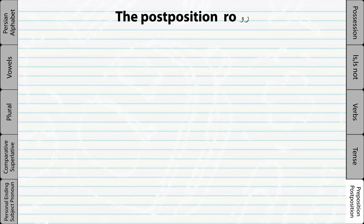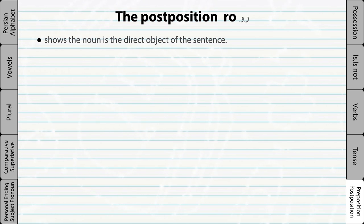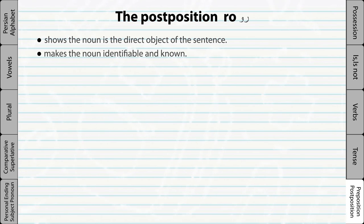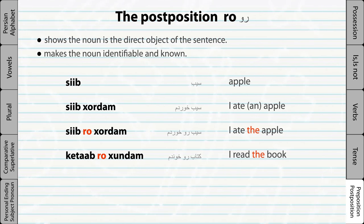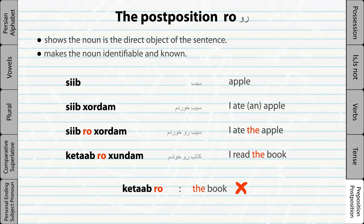When you learn Persian, one word you might see very often is the postposition 'ra.' The postposition 'ra' has two functions: first, it shows that the noun is a direct object of the sentence; and second, it makes the noun identifiable and known, just like the English definite article 'the.' However, the postposition 'ra' cannot be used with a noun alone like the English definite article. It must be used with a verb and a subject. So 'Kitab ra khundam' means 'I read the book.' Although the postposition 'ra' can work as a definite article, it should be used within a sentence and cannot be used alone.